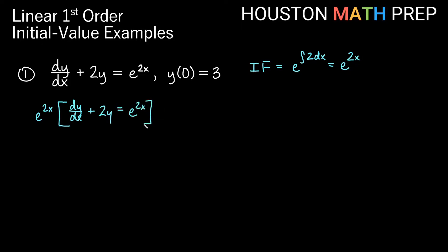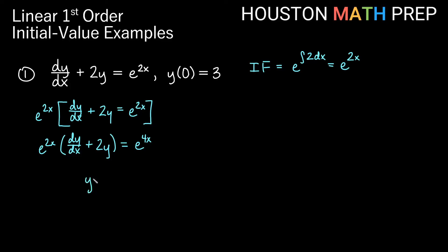Remember what we do: the left hand side is going to be a shortcut as a product rule, so we don't distribute on the left side. We know this is a product rule, so we're going to only distribute to the right side. So e to the 2x times e to the 2x will give us e to the 4x — we add the exponents. When we take the antiderivative, remember the left side is a product rule of y times the integrating factor.